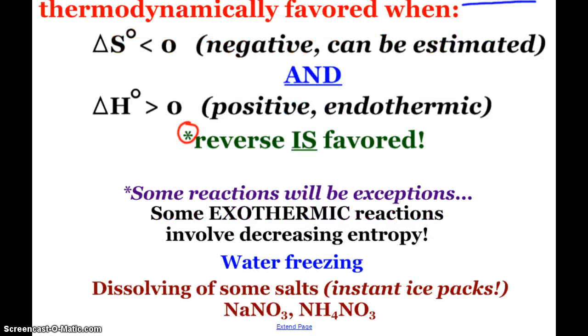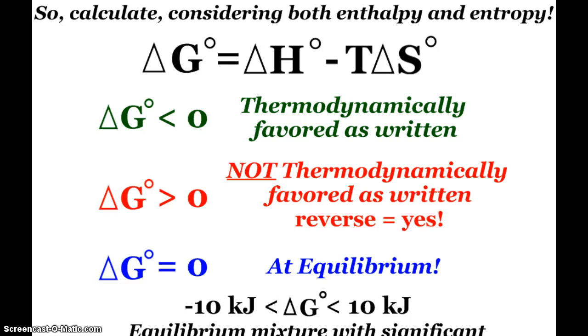Of course, there's going to be some exceptions and whatnot. Some exothermic reactions actually involve decreasing entropy, like when water freezes. We know that water sets up an incredibly organized pattern when it freezes, and so there's a decrease in entropy. Or the dissolving of some salts, like our instant ice pack salts, ammonium nitrate or sodium nitrate. So when we have those situations, often time it's required that we calculate the ΔG so that we are considering both enthalpy and entropy changes.